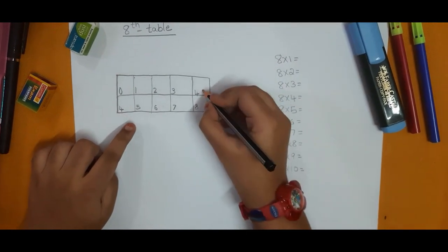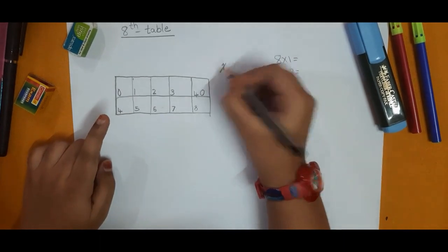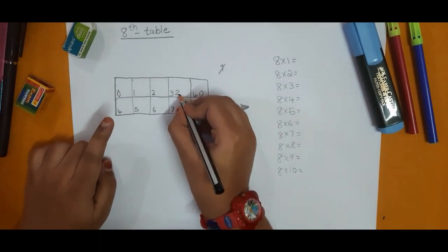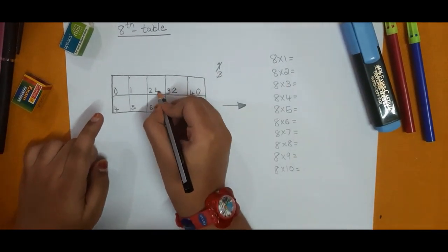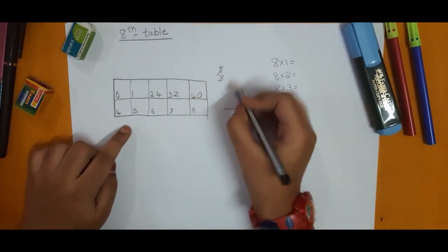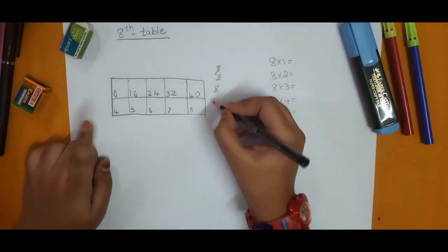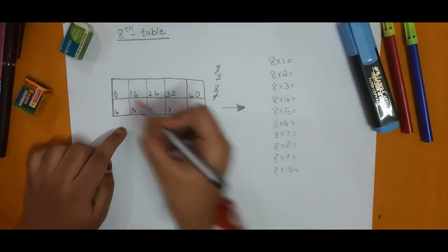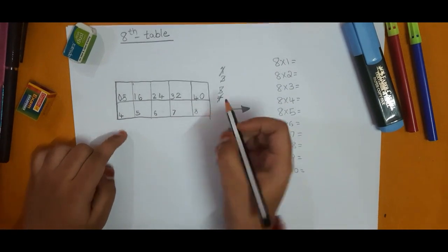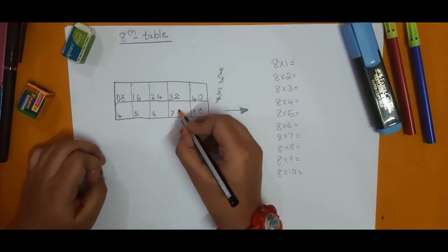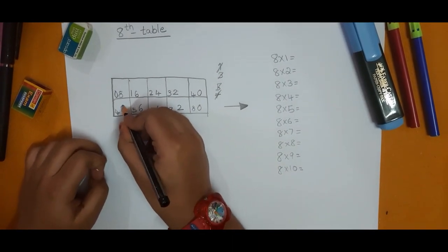Now start with here. Zero after one — so one skip, two. Two after three — so three skip, four. Four after five — five skip, six. Six after seven — seven skip, eight. Now say here: zero, two, four, six, eight.